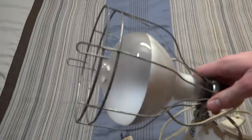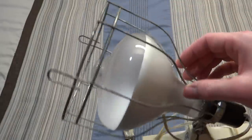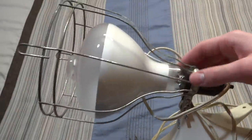The first thing we see here, which is pretty obvious, is the guard, which protects the bulb because the bulb is made of pretty thin glass.